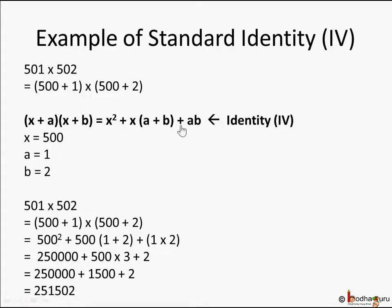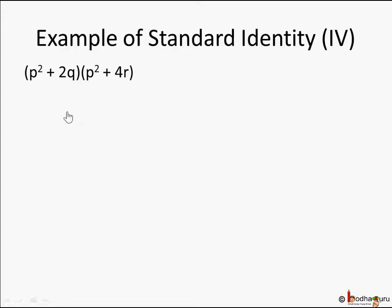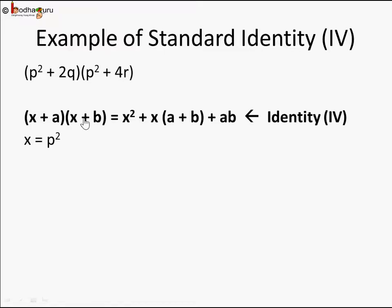Finally we get 251,502. We solved this using Identity 4 by breaking 501 as 500 + 1 and 502 as 500 + 2. Let's take one more example — this time an algebraic expression: (p² + 2q)(p² + 4r). Which law can we use? We can use Standard Identity 4 because there are three variables — x is the same p² in both, and the other terms can be 2q and 4r.